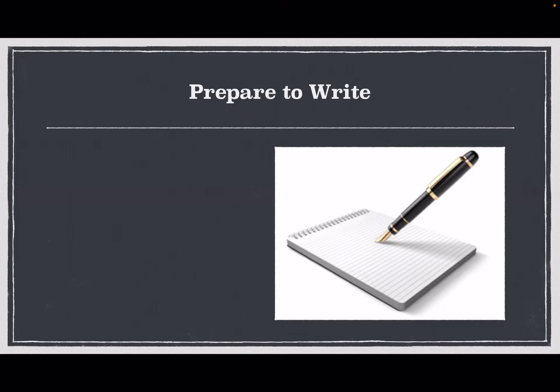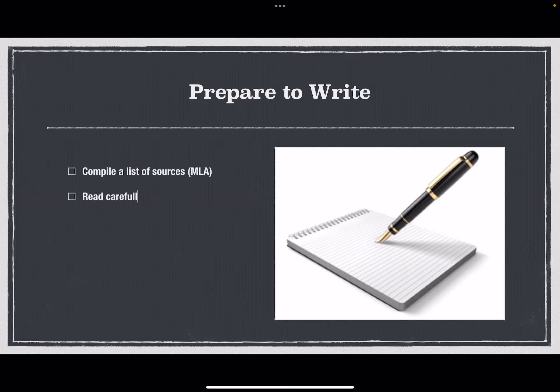Now you're actually going to sit down and write your annotated bibliography. Here are some things to consider as you're preparing to write. First, compile your list of sources and give the sources in whatever documentation style is required — again, for our assignment that's MLA. Read the sources carefully; to write an annotation you have to understand the source's argument, so make sure you understand it carefully.